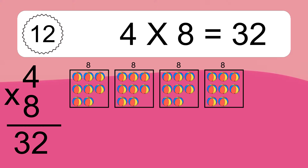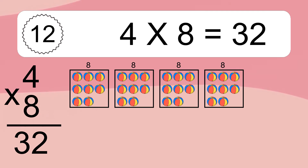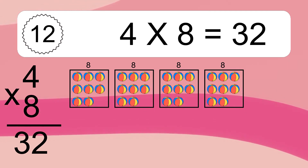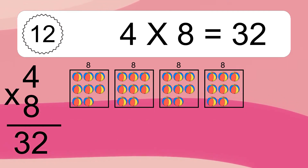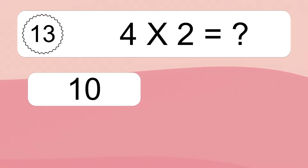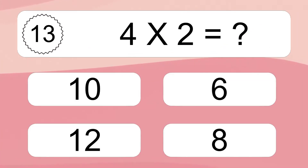We have 4 boxes and each box has 8 colorful balls inside. If you count all the balls in all the boxes together, you will have 4 times 8 balls. This equals 32 balls.